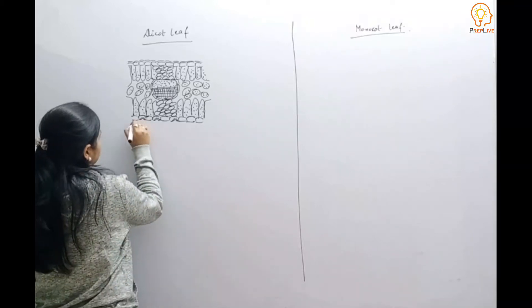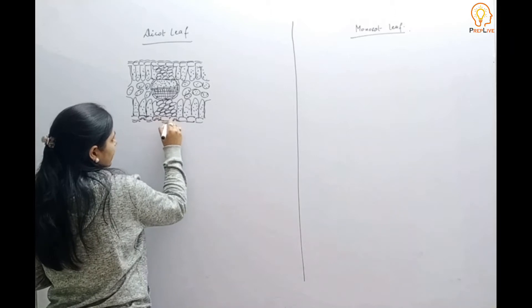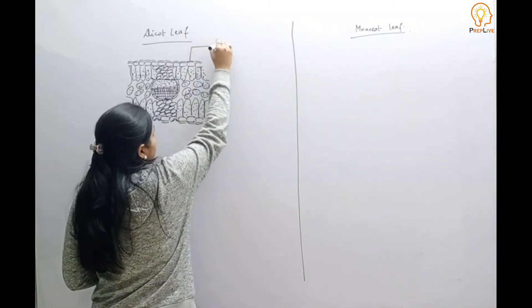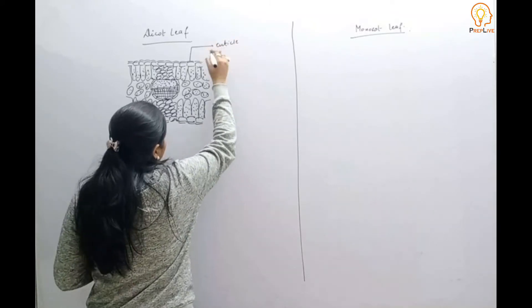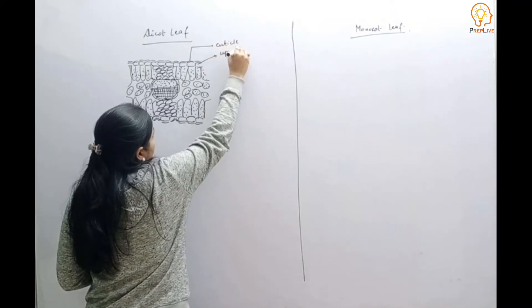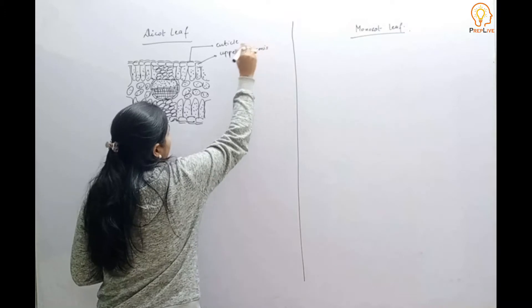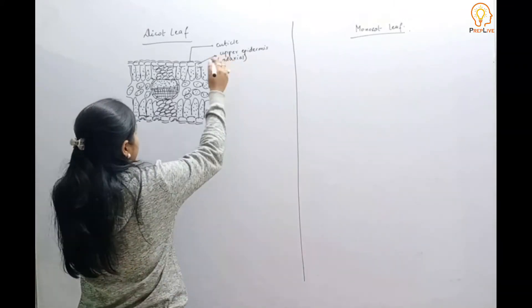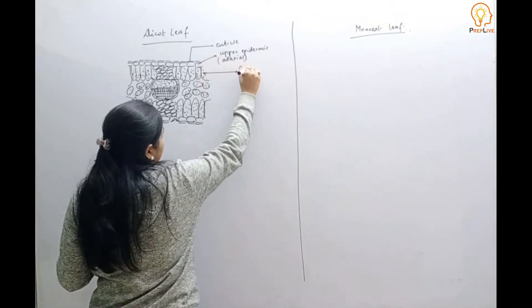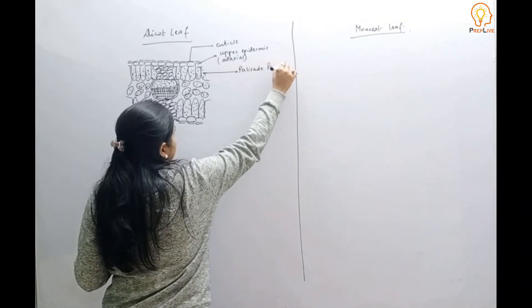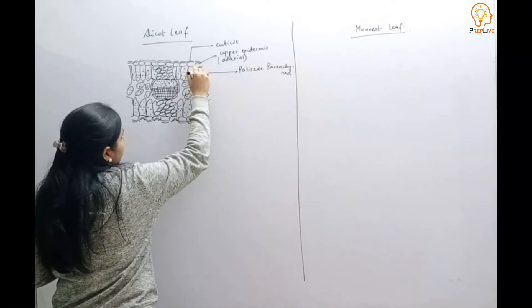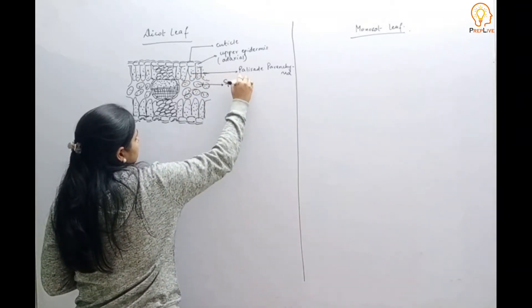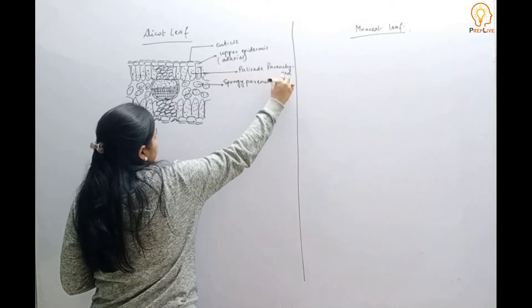This is the pattern of tissues in the dicot leaf. When we start with the pattern of arrangement, the first layer that appears is the cuticle, followed by the upper epidermis. This upper epidermis is also called the adaxial surface or adaxial epidermis. Below that is the palisade parenchyma, which consists of long, elongated structures.